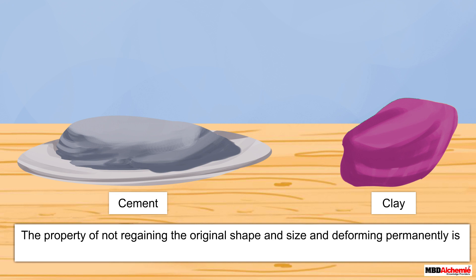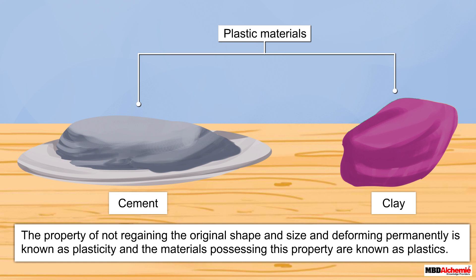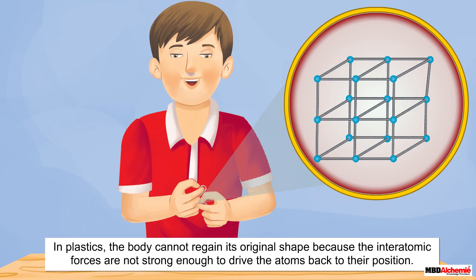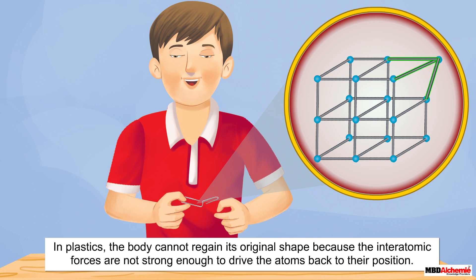The property of not regaining the original shape and size and getting deformed permanently is known as plasticity, and the materials possessing this property are known as plastics. In plastics, the body cannot regain its original shape because the inter-atomic forces are not strong enough to drive the atoms back to their positions.